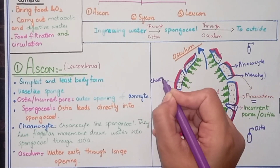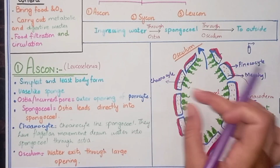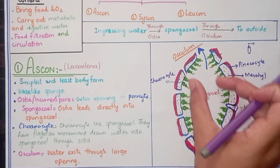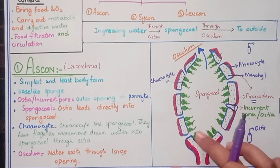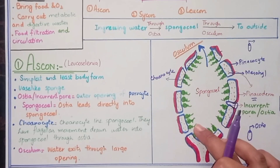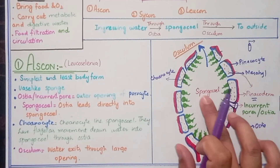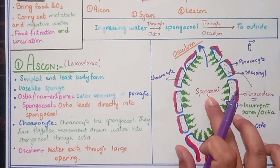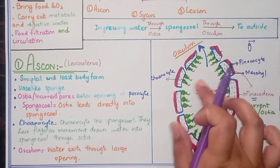Next to the Mesohyle there is a structure known as Choanocytes. After that there is a cavity — a central empty space — which is known as the Spongocoel.